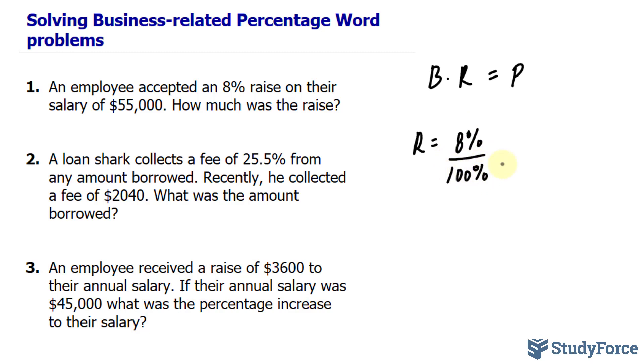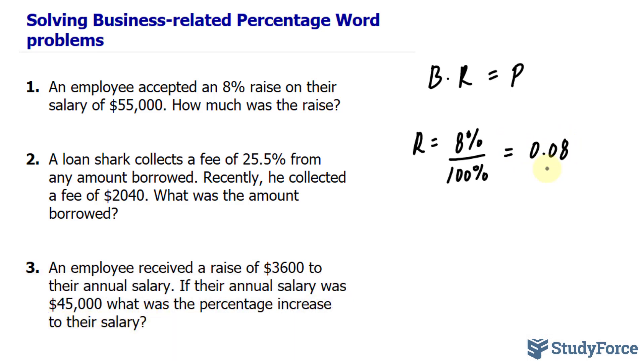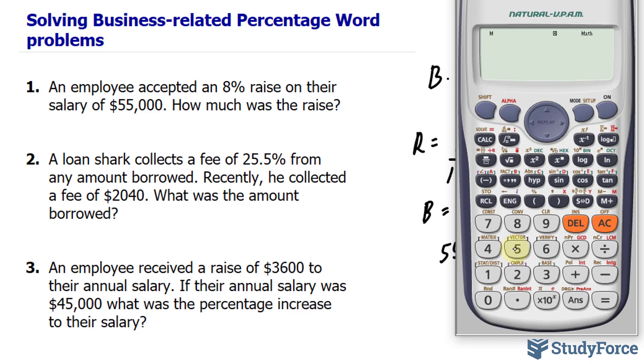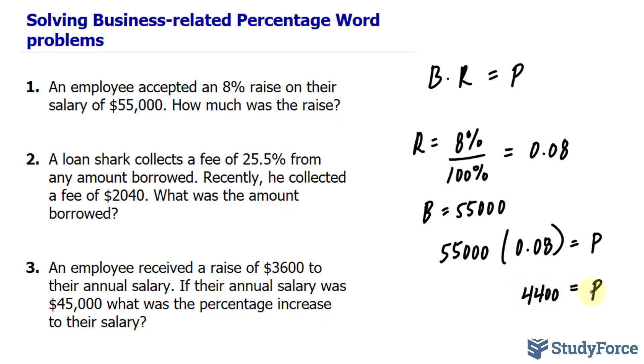You cannot use the percentage in its raw form. If we divide this out, we end up getting 0.08. Now, their base salary is $55,000. That's what we're starting with. And the raise is an 8% portion of $55,000. So if we set B as $55,000 and substitute these values into that formula, we can find out the portion which represents the raise. So taking $55,000 and multiplying it to 0.08, that gives us $4,400 as our portion.